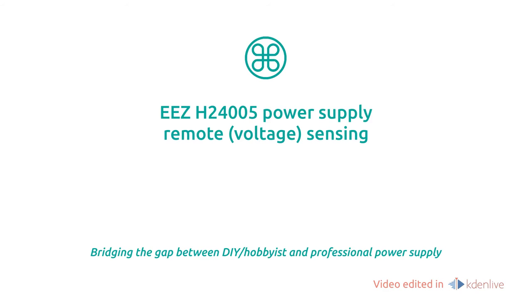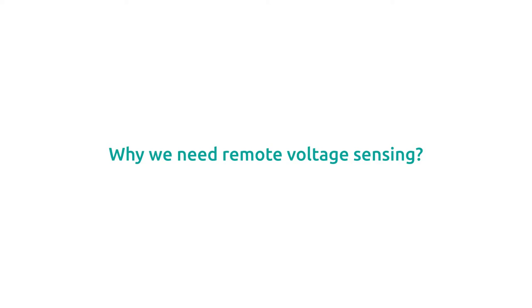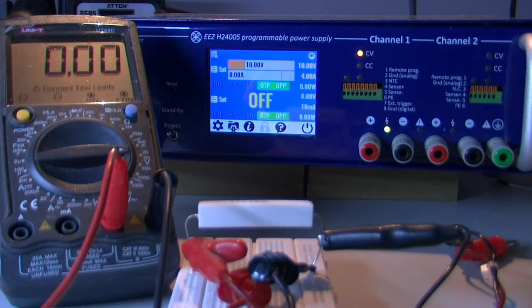Hi, in this video I will talk about remote voltage sensing or just remote sensing. Remote sensing is used to compensate voltage drop on load connecting cables to ensure that power supply delivers exact output voltage.